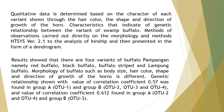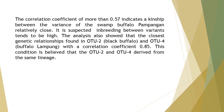Results were then presented in the form of a dendrogram. Results show that there are four variants of Buffalo Pampangan, namely Red Buffalo, Black Buffalo, Striped Buffalo, and Lampung Buffalo. Morphology of Buffalo such as body size, hair color, shape and direction of growth of the horns is different. Genetic relationship is shown with a value of correlation coefficient of 0.57, found in group A and group B, and a value of correlation coefficient of 0.612 also found in group A and group B.